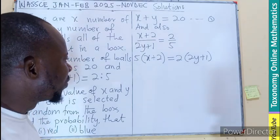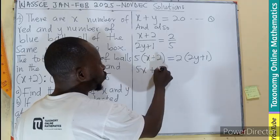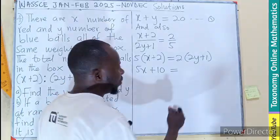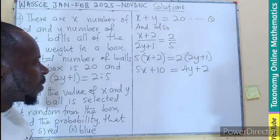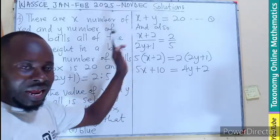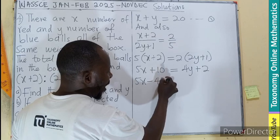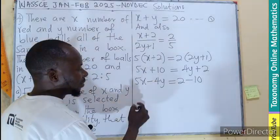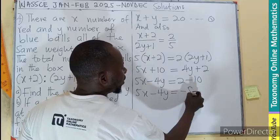We can expand to remove the brackets. So 5 times X gives 5X, plus 5 times 2 gives 10, and that should equal 2 times 2Y which is 4Y, plus 2 times 1 which is 2. Since we have different variables, let's bring all variables to the left and constants to the right. So 5X minus 4Y, then we transpose the 10 to become a minus.